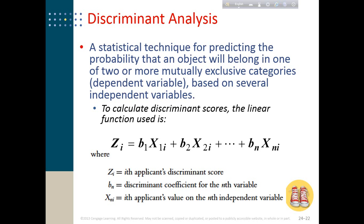If your dependent variable is categorical — taking values like 0 or 1 — then you will use Discriminant Analysis. The idea is mostly the same as regression analysis. In Discriminant Analysis, the dependent variable represents two or more mutually exclusive groups, and we use different independent variables to check which variable determines that a particular observation belongs to a particular group.